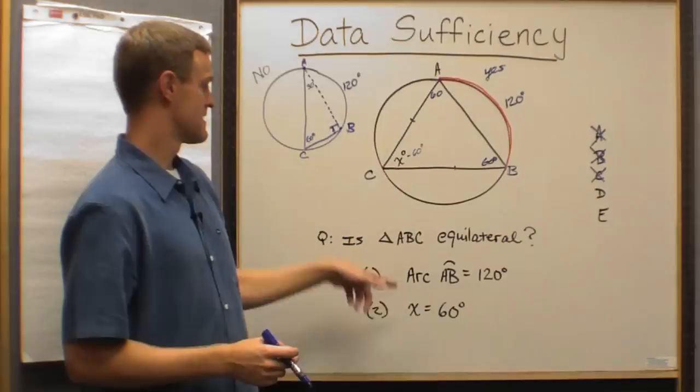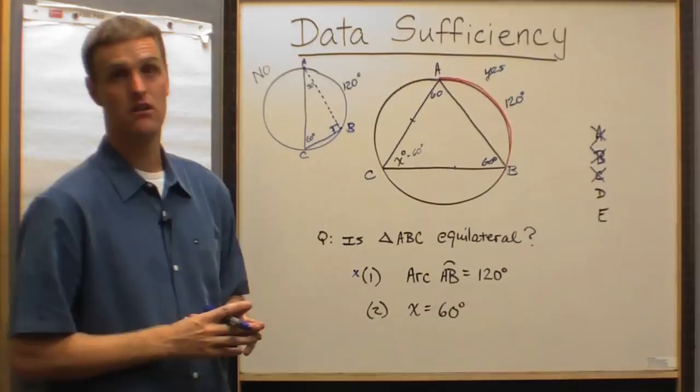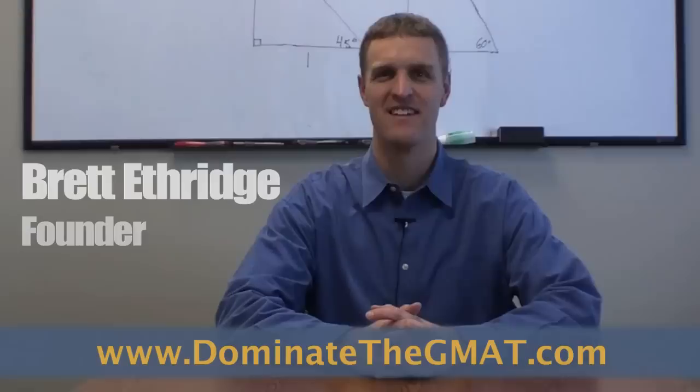So that is not sufficient. And if that's not sufficient, statement two gives us the exact same information. Same exact thing. That can be 60. But that's not an equilateral triangle. The point is here, neither is sufficient.